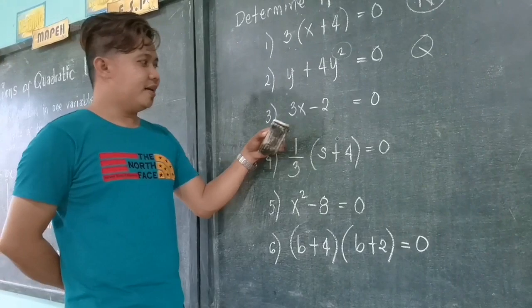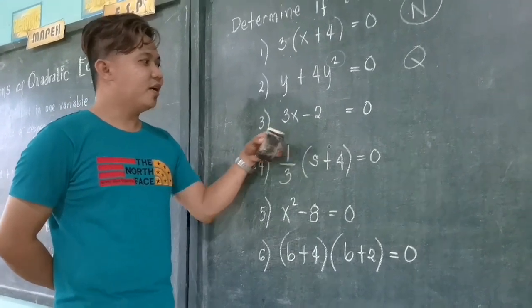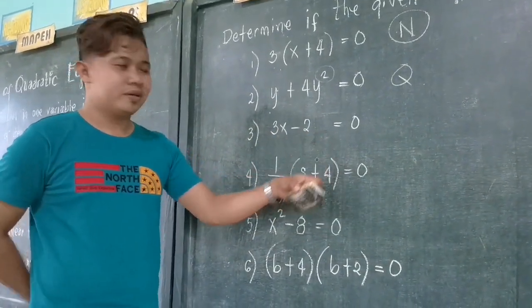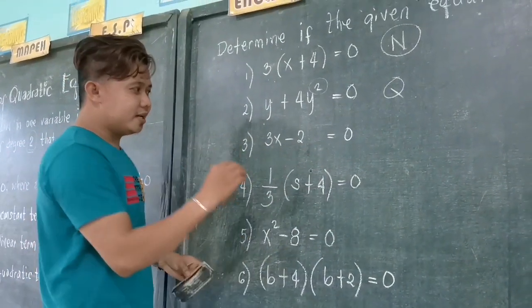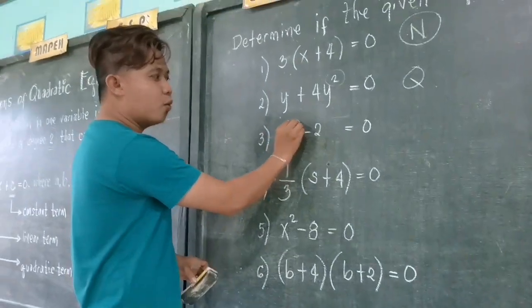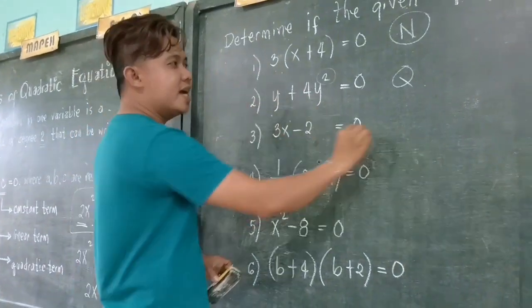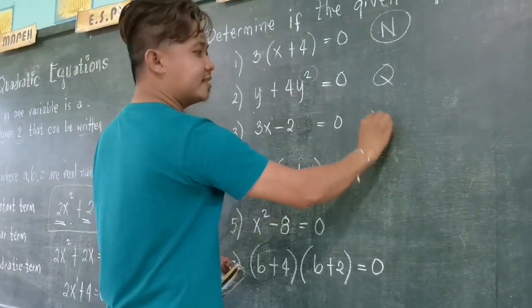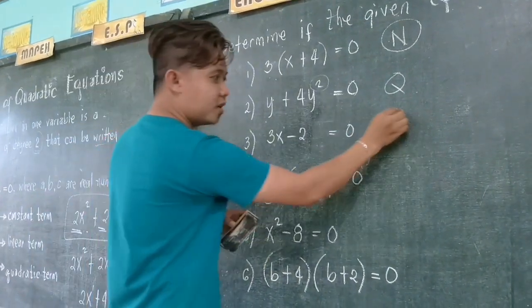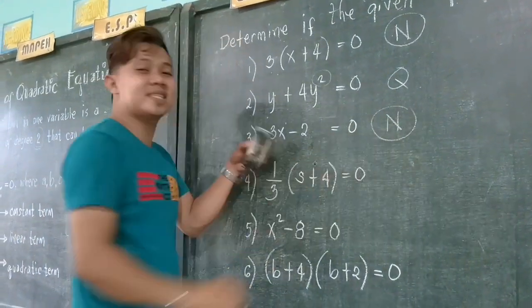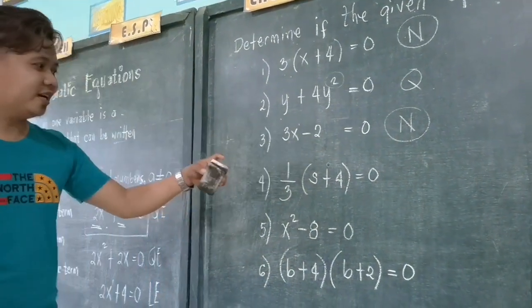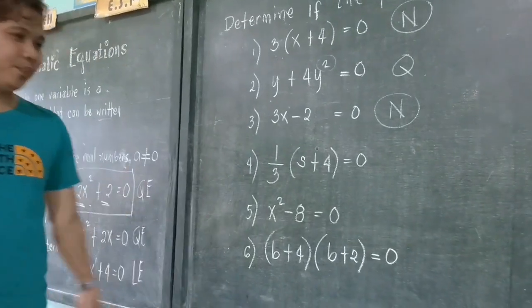Number 3: 3x plus 2 equals 0. The highest exponent is only 1, therefore this is not a quadratic equation — this is just a linear equation.